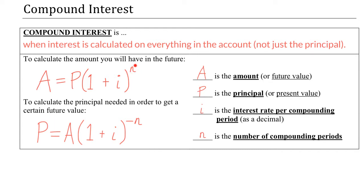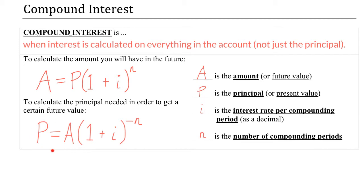Certain calculators have their own buttons to press to get an exponent — sometimes it looks like a caret (^) and sometimes it looks like x^y. You need to find the exponent button on your calculator. Also, in the formula to calculate the present value or principal, this is a negative exponent, so you need to find the negative button on your calculator as well.